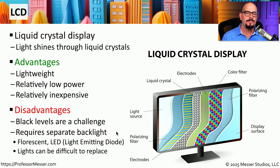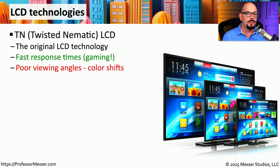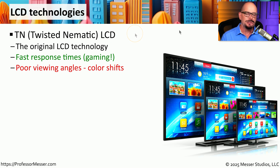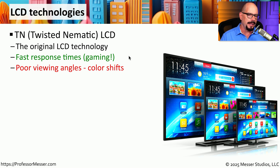These lights can also be somewhat difficult to replace. On larger LCDs, you may be able to replace a portion of the backlight, but on smaller, less expensive systems, you may require a complete replacement of the display. There are also different technologies used with liquid crystal displays. One of these is the TN version — TN stands for Twisted Nematic. This was one of the very first types of LCDs introduced, and it provides very fast response time, so it's perfect for things like gaming or fast-moving information on the screen. Unfortunately, if you move off-center from that display, the color will shift as you move farther off-angle, so if you have a lot of people that need to see the display, a Twisted Nematic LCD may not be the best choice.